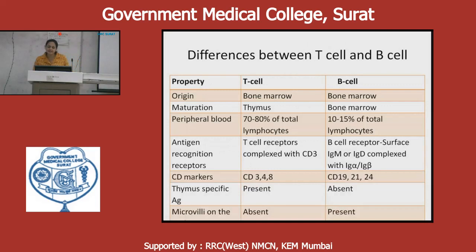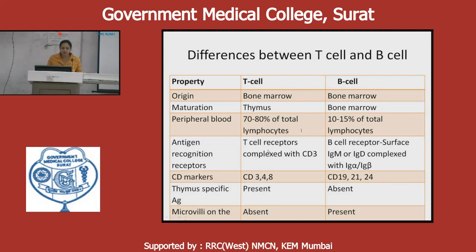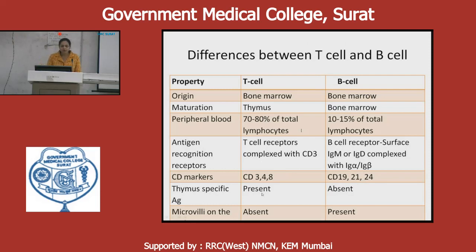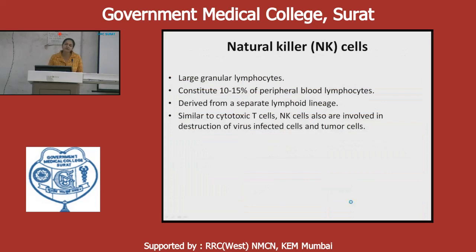The differences between T cells and B cells: both originate from bone marrow, but T cells mature in the thymus while B cells mature in the bone marrow. Peripherally, 70–80% are T cells and 10–15% are B cells. T cell receptors are complexed with CD3, while B cell receptors are IgM or IgD. CD markers for T cells are CD3, CD4, and CD8; for B cells they are CD19, CD21, and CD24. Thymus-specific antigen is present on T cells but absent on B cells. Microvilli are not present on T cells but are present on B cells.